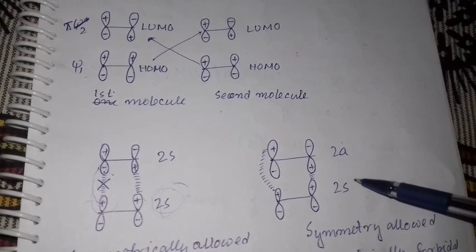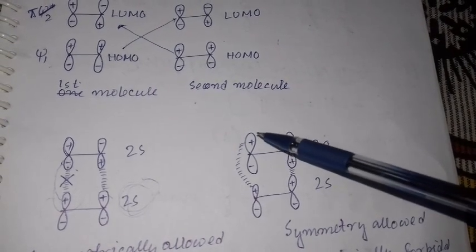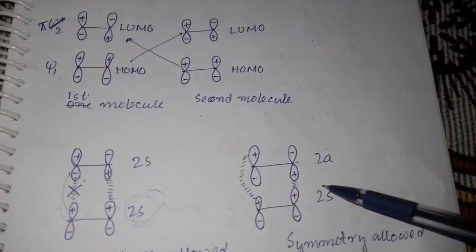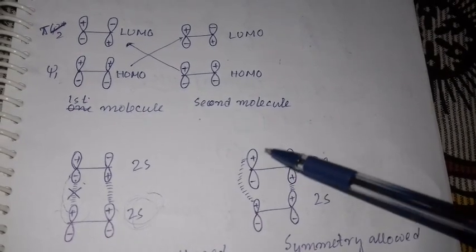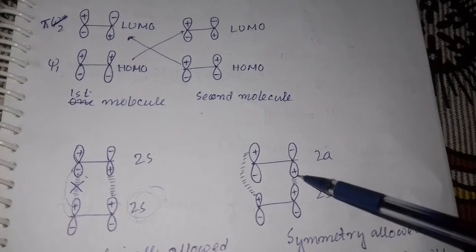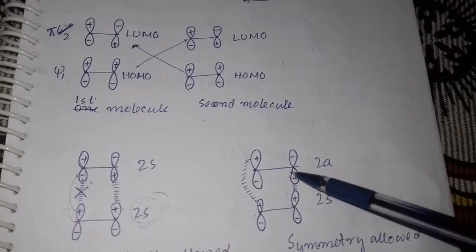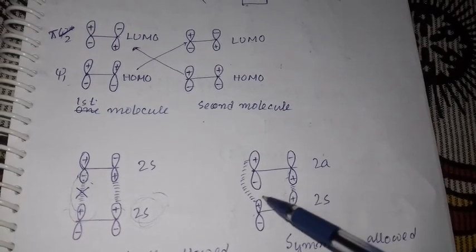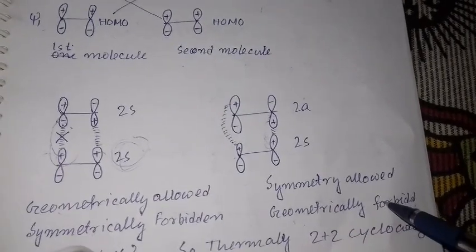Now considering the antara-supra addition: here, the positive lobe interacts with a positive lobe on one end, and positive with positive on the other — making that molecule suprafacial. However, in the other molecule, opposite-side lobes are interacting, making it antarafacial. While this transition is symmetry allowed, since the alkene molecule is very small, this transition cannot geometrically occur — it is symmetry allowed but geometrically forbidden.